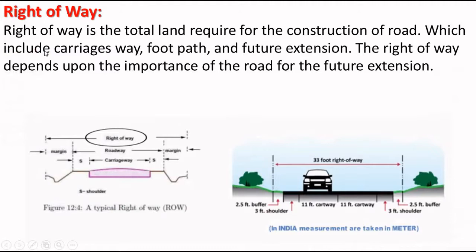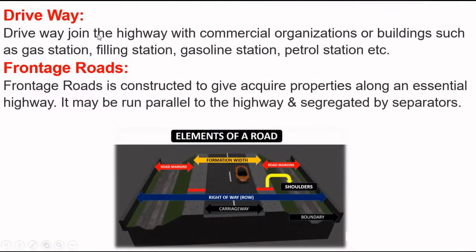The next component is right of way. Right of way is the total land required for the construction of a road, which includes carriageway, footpath, and future extension. The right of way depends upon the importance of the road and future extension. The next component is driveway. A driveway joins the highway with commercial organizations or buildings such as gas stations, filling stations, and petrol stations.